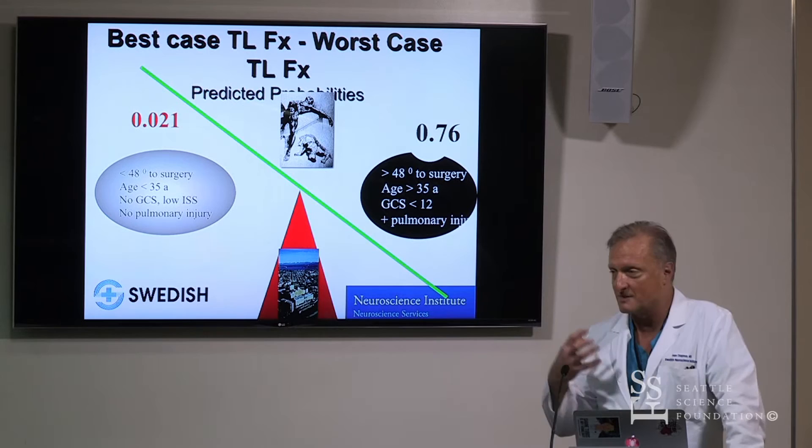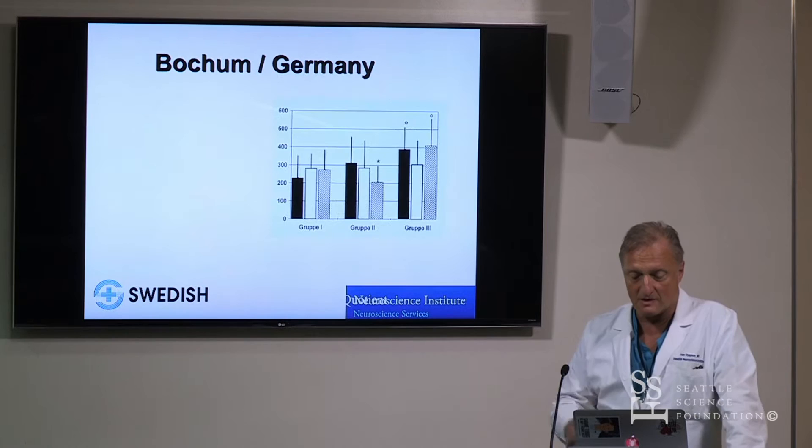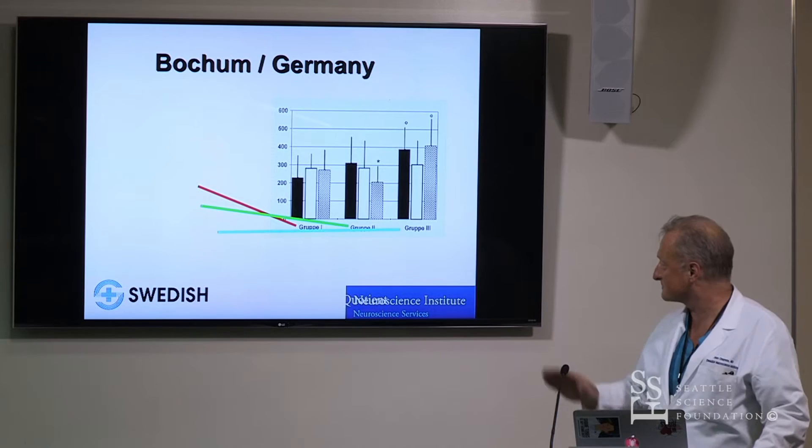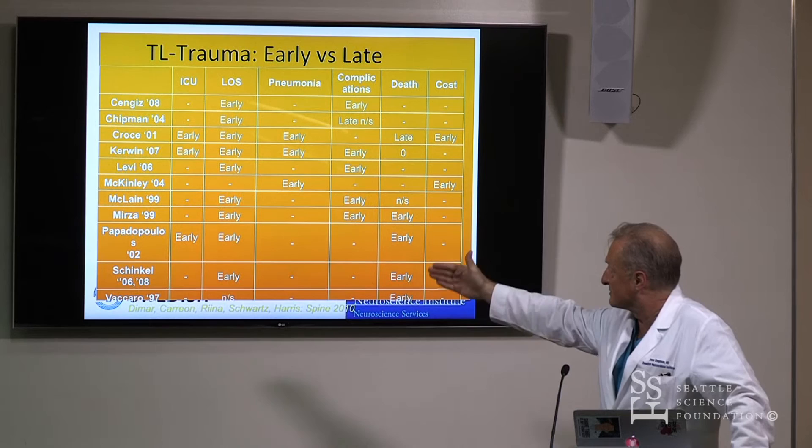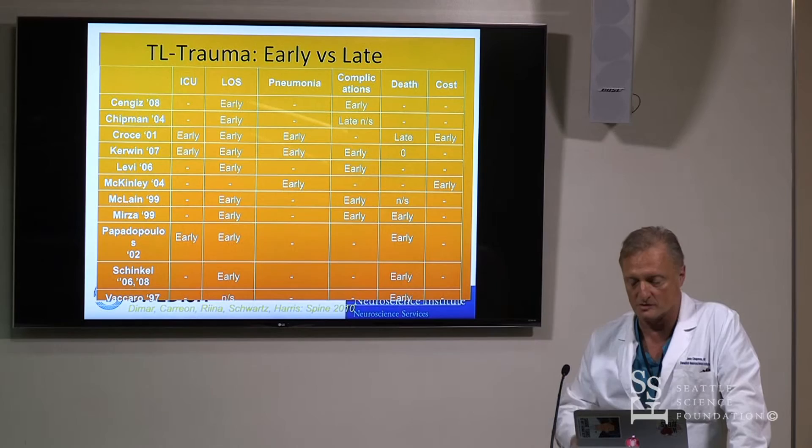The same numbers came from Germany from a different group at Dr. Fizan's hospital. The longer you wait, the more of a problem you have. In terms of larger papers comparing early versus late — early being within 40 hours — the preponderance of literature supports doing thoracolumbar trauma surgery within two days.